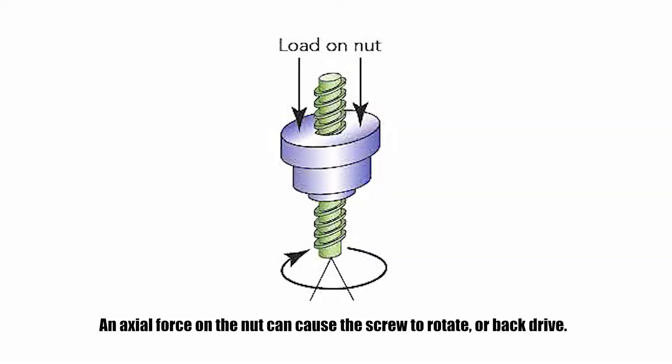Although backdriving can happen regardless of the screw's orientation, it most often occurs in vertical applications, especially if the load is stationary and the holding mechanism, such as a brake or a counterweight, fails.